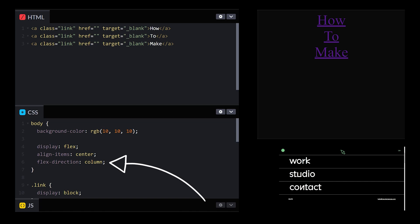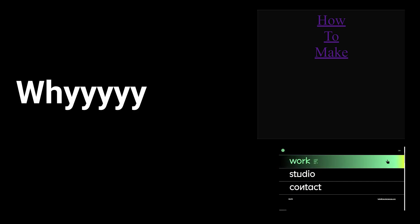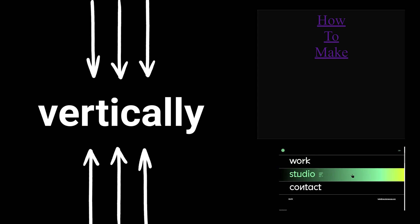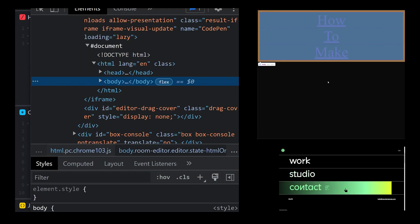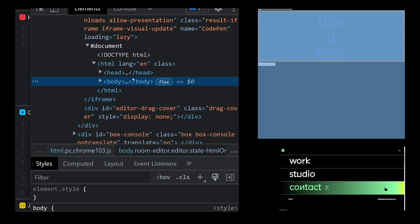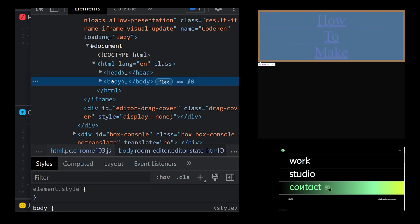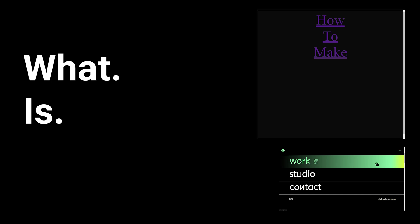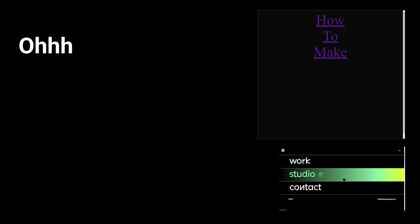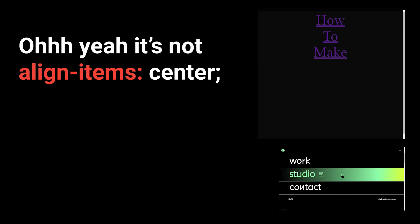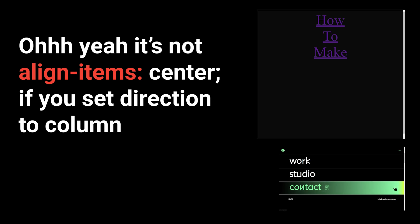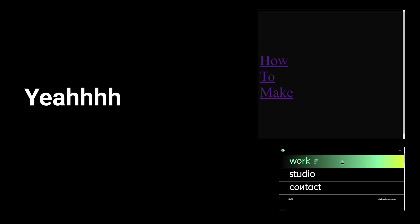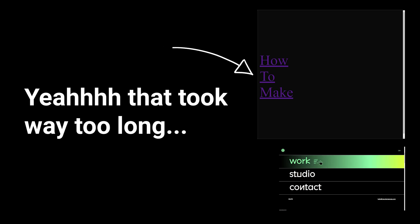Gotta set the flex direction to column. Why is it not centering vertically? I don't understand. Inspect elements — the body doesn't fill the viewport by default. Set it to 100% viewport height. It's not align-items center; if you set direction to column, you have to use justify-content center. Yeah, that took way too long.